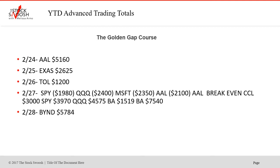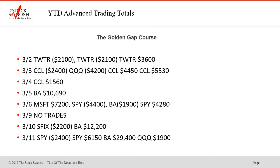February 27th, SPY lost, Qs lost, Microsoft lost, AAL lost, then break even. CCL won, SPY won, Qs won, BA won — two trades. BA we did a million times this year, CCL so often. This was coming right before COVID. BYND was a nice winner on the 28th, and earnings season was at this beginning part of the year too.